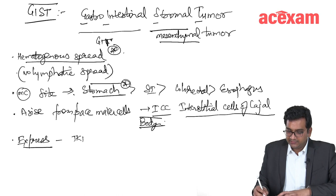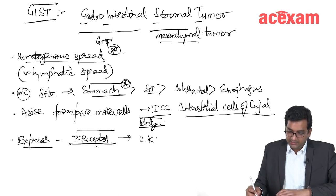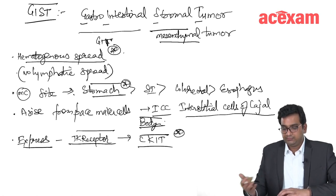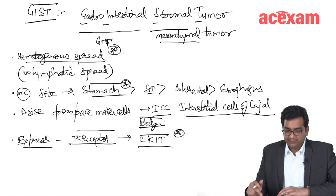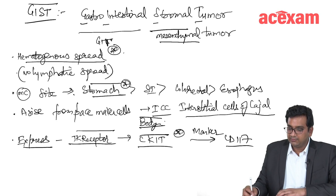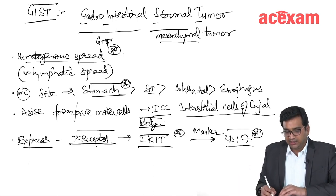GIST expresses a tyrosine kinase receptor called c-kit. This is why we are able to use medicines that inhibit the tyrosine kinase receptor. The marker is CD117. A few years back, CD117 being seen in GIST was very commonly asked.